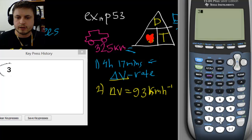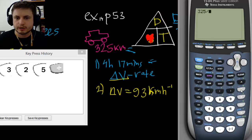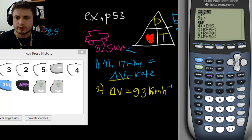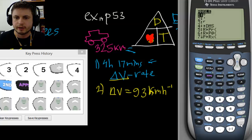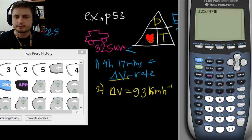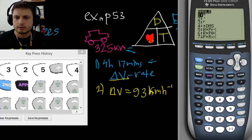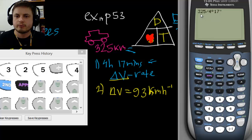This is how you enter it: 325 divided by—now this is where it gets complicated. So you type 4, now you have to specify that this is hours. To specify that this is hours, you go into second apps, which is actually called angle. We're looking at these two symbols. This one is for hours, this one is for minutes. So click on this, the circle thingy, which is degrees. So 4 degrees. And how many minutes? 17 minutes. 17 second angle, 17 minutes. So this is basically 325 kilometers divided by 4 hours and 17 minutes. This will give us speed in kilometers per hour.